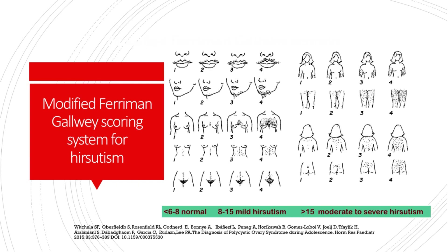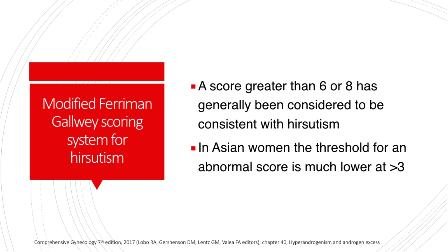This is an example of the modified Ferriman-Galloway scoring, or MFG scoring system, that we use for hirsutism. This is also the same scoring system introduced in my PCOS lecture. The cut-off here is usually around 6 to 8. A score greater than 6 or 8 has generally been considered consistent with hirsutism. However, among Asian women, the threshold or cut-off for an abnormal score is much lower, usually at 3.